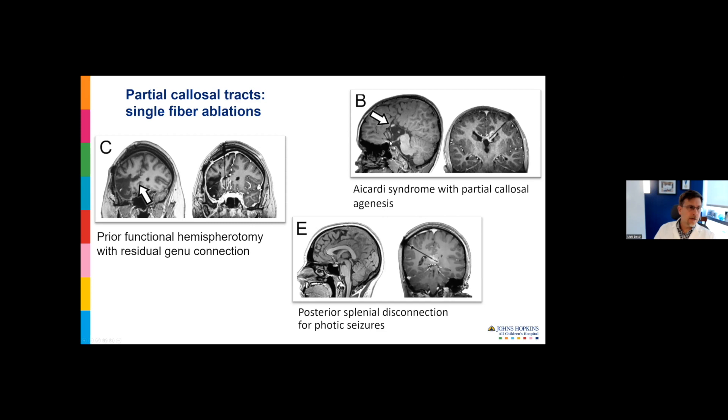The top right panel is a young girl who had Aicardi syndrome. Typically they have complete agenesis of the corpus callosum, but in her case, she had this residual callosum. We did a single fiber complete callosotomy—took out her complete residual callosum, and she had a dramatic improvement. She was an Engel class one; her seizures completely stopped. This was another single fiber ablation of a young lady who had photoinduced seizures. Her neurologist asked for a splenial disconnection, but she did not have a good outcome from this.